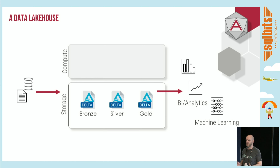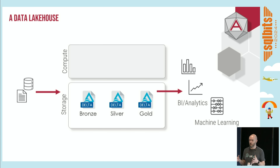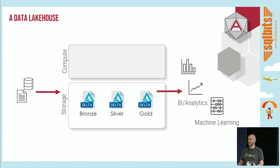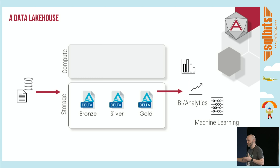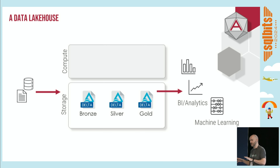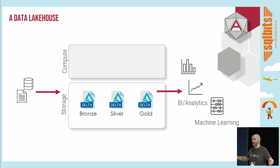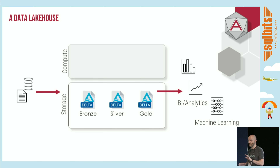If we think about a regular relational database - a data warehouse, for example - you're sitting with everything in the one place. It's a SQL server. Your storage and compute are tied together. If you want to scale up that compute, you're going to have to build a bigger server. Separating that storage and compute, when we think about cloud architectures, means that we can have lots of data stored and we only process what we need to.